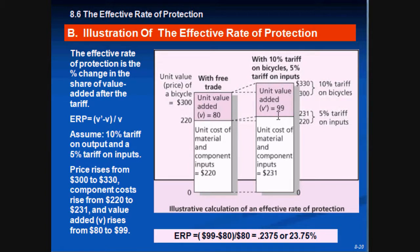To find the effective rate of protection, take the new value added (99) minus the old value added (80), divided by the old value added (80): that equals 0.2375, or 23.75%. Simple enough — super easy.